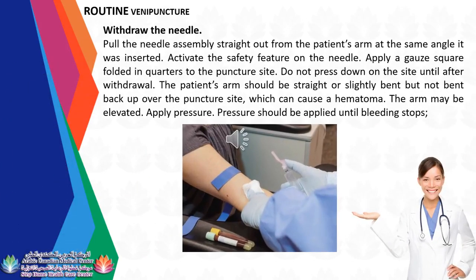Withdraw the needle. Pull the needle assembly straight out from the patient's arm at the same angle it was inserted. Activate the safety feature on the needle. Apply a gauze square folded in quarters to the puncture site. Do not press down on the site until after withdrawal. The patient's arm should be straight or slightly bent, but not bent back up over the puncture site, which can cause a hematoma. The arm may be elevated. Apply pressure until bleeding stops.